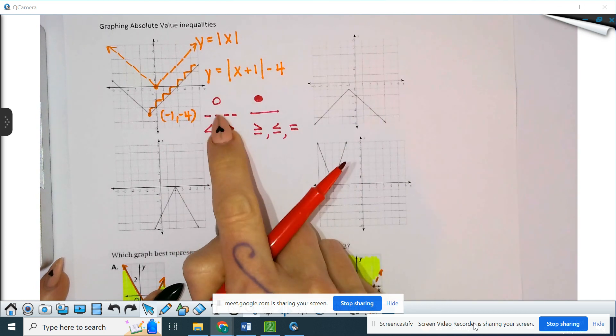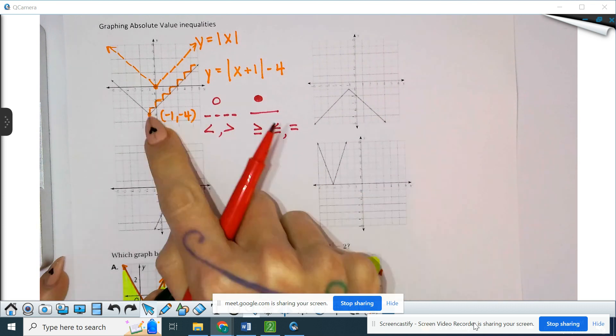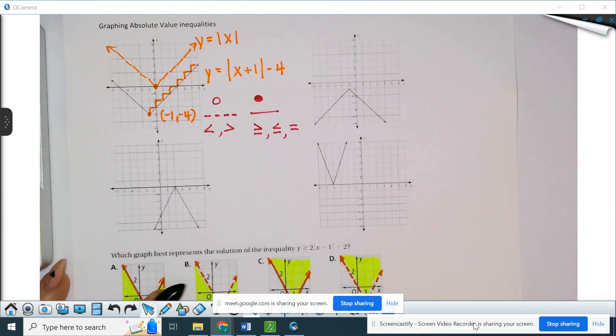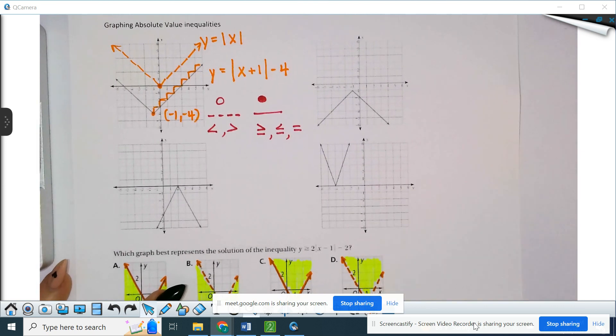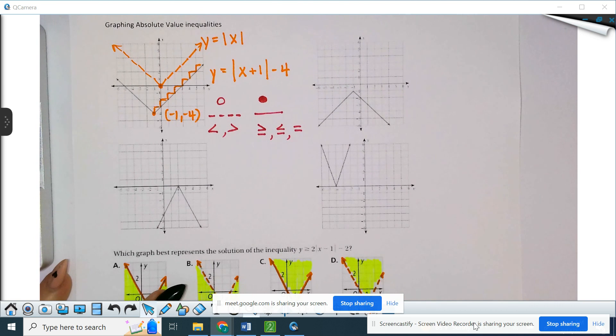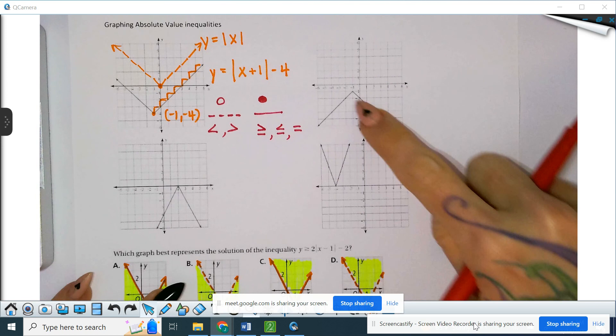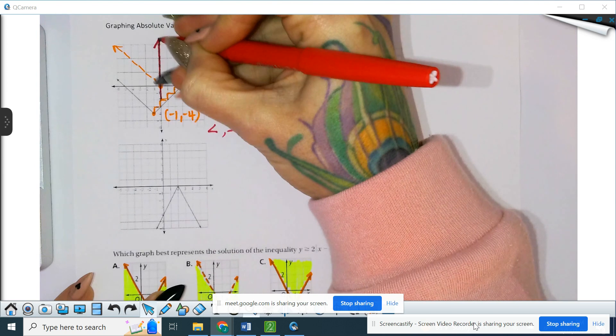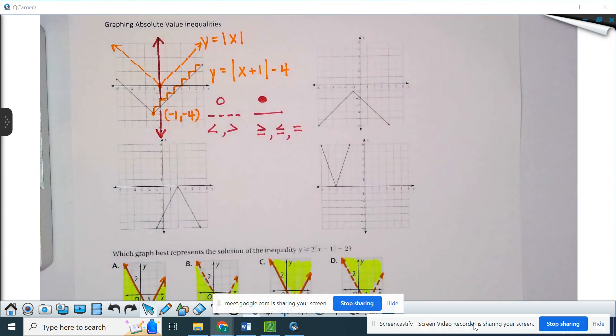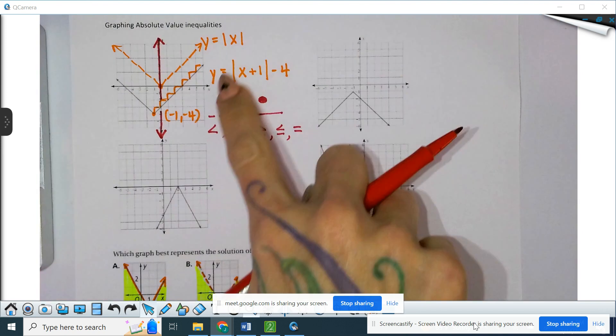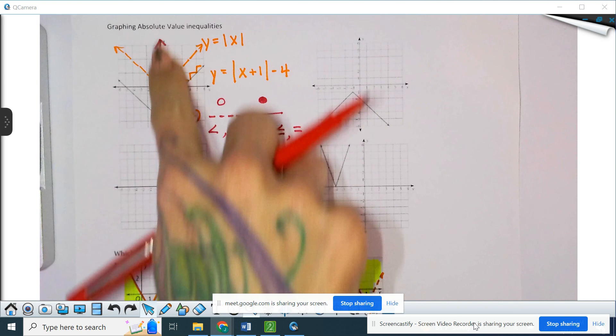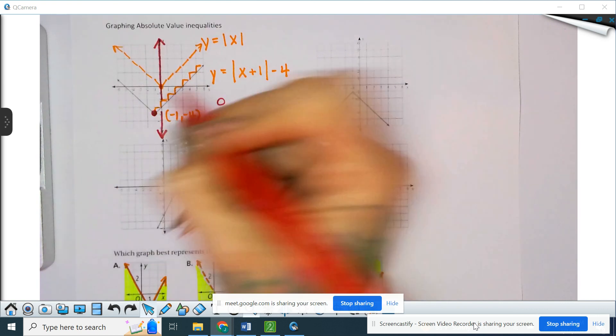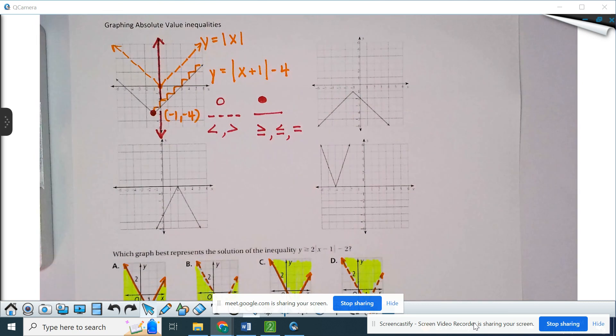Not too much different if you can identify this graph. The only thing that changes, and I have found students either pick up really quickly or they don't, is the shading up versus shading down. When you're looking at a Y equals absolute value like this, you're looking at your Y axis.